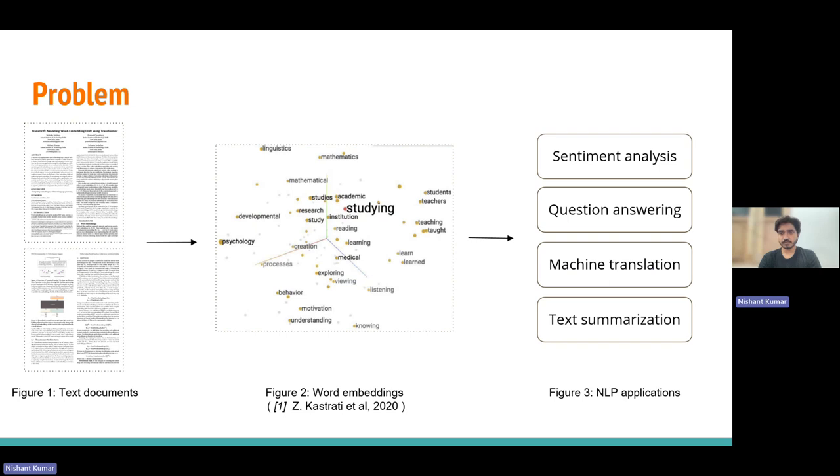Word embeddings play a major role in modern NLP applications, providing a reusable feature store that can be easily shared across multiple NLP tasks. These word embeddings are trained on text documents, but what happens when the text distributions change and word meanings shift over time?